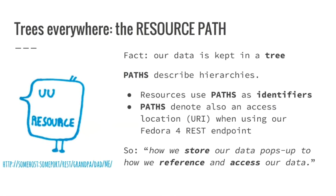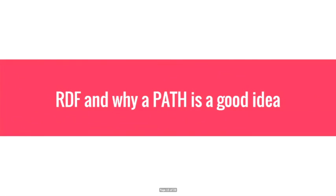This guy is named some-host:some-port/rest/grandpa.me. And he is not only an identifier — he is the whole path. In Fedora 3, almost everything was XML except the RELS-EXT and RELS-INT stuff.